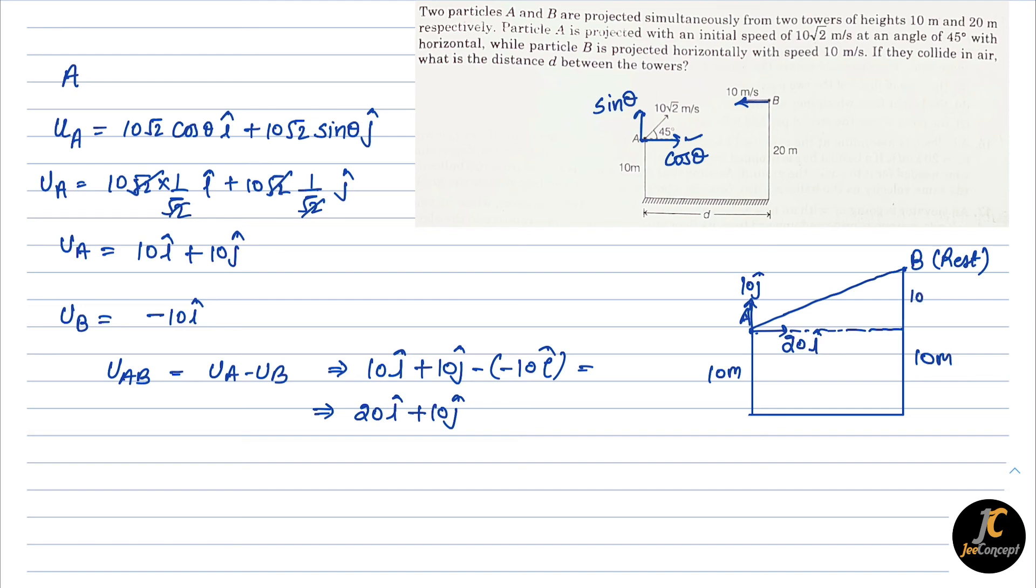Let's say this angle is alpha. Using trigonometry in triangle ABC, I can say tan alpha equals perpendicular upon base, which is 10/d. This distance was d. Again from this velocity components we can also find the alpha value, so from here the tan alpha value is 10/20. Comparing this tan alpha and tan alpha, we will get 10/d = 10/20, so that means d is 20 meter.